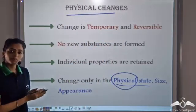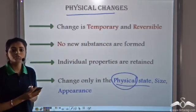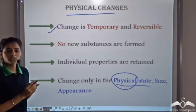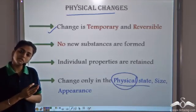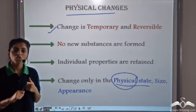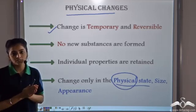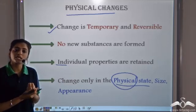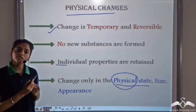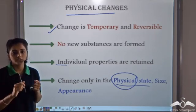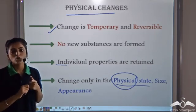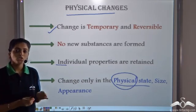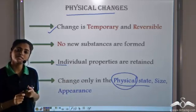So all the examples we just saw are examples of physical changes. In physical changes, the first point to remember is the change is temporary — it can be reversed, so it is reversible. No new products or new substances are formed. Also, the individual properties of the substances are retained. And in all these changes, the change is only in the physical state, size, or appearance — that is, no chemical composition is being changed. Such changes are known as physical changes.